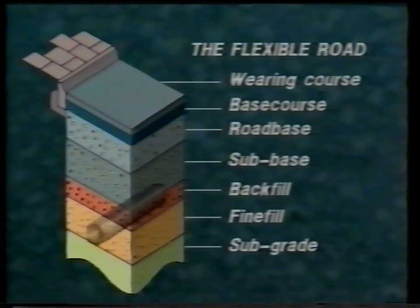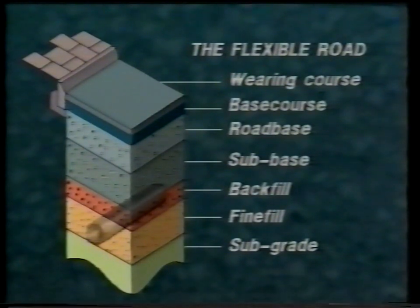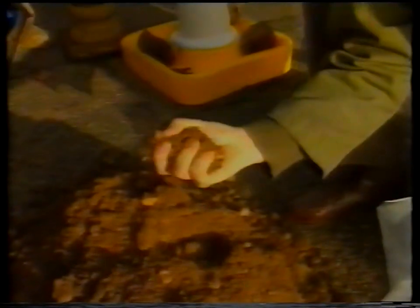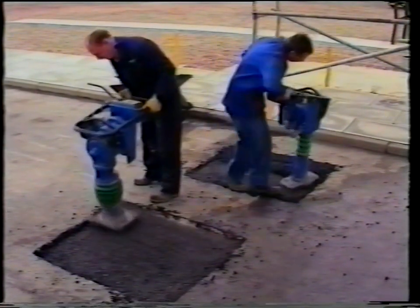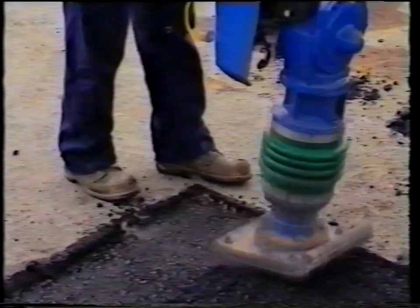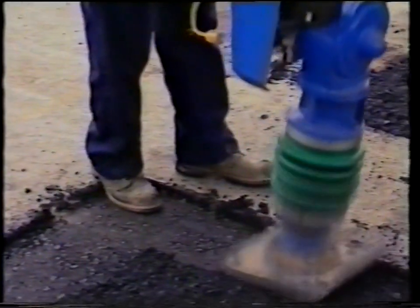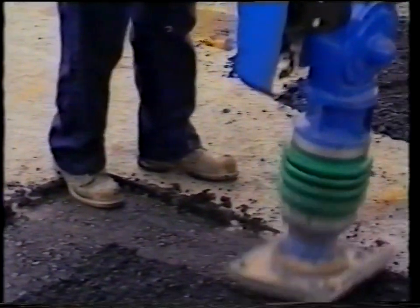The back fill layer lies immediately above the fine fill layer. Back fill thickness varies to make up the difference between the depth of the reinstatement and the thickness of the road structure. In the construction of all of these layers, acceptable standards can only be achieved by using well graded materials in good condition. These materials must be compacted to the correct layer thicknesses using approved compaction equipment with the specified number of compaction passes.